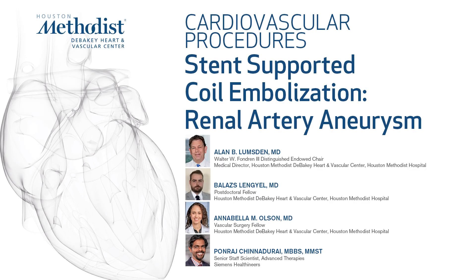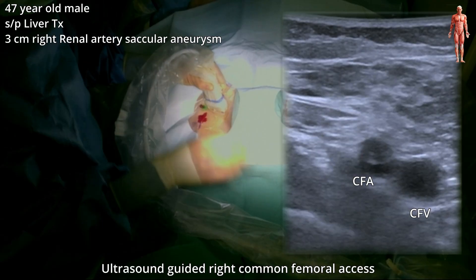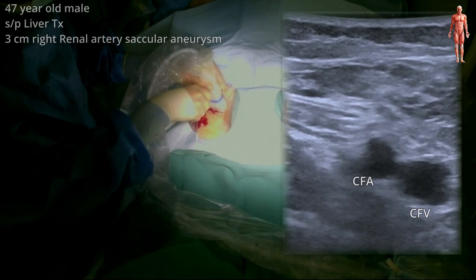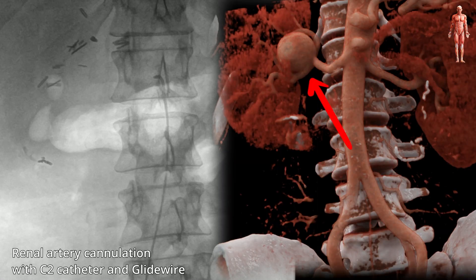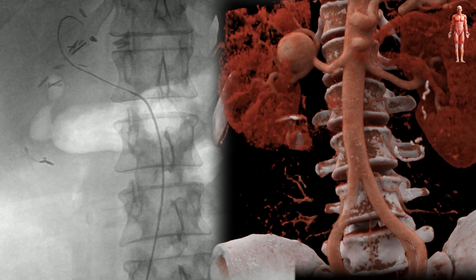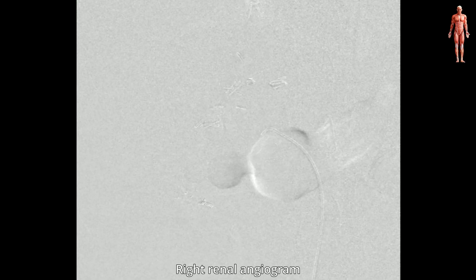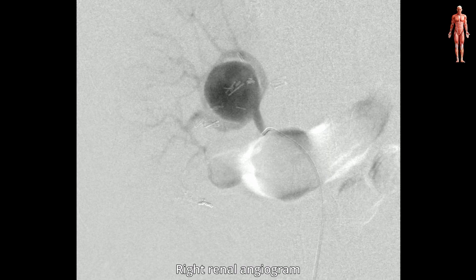In this video we present the technique of stent-supported coil embolization for a secular aneurysm of the right renal artery. Ultrasound-guided right common femoral access was obtained with a micropuncture kit, then a six-french sheath was introduced. A C2 catheter and a hydrophilic guide wire were used to cannulate the right renal artery. Right renal cannulation was confirmed with an angiogram.